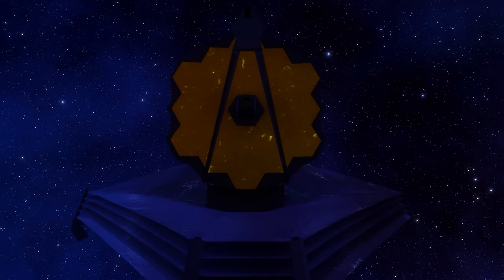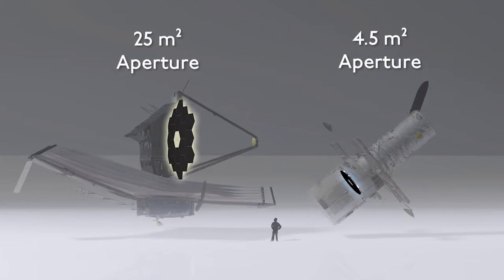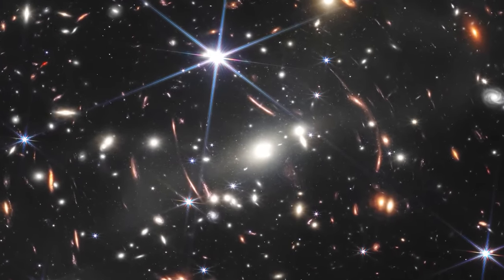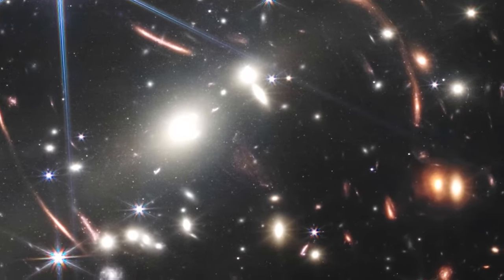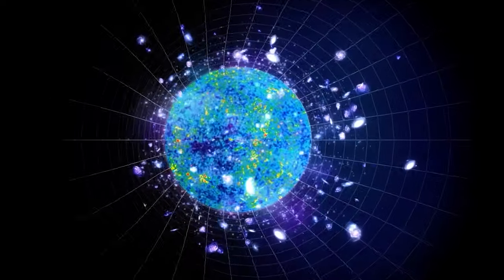The James Webb Space Telescope, which has been in development for 25 years, is considered the successor of Hubble, with a capacity 10 billion times more powerful. Since its launch, it has captured stunning images of galaxies that formed just a few hundred million years after the Big Bang, as well as the moment before the birth of a star.